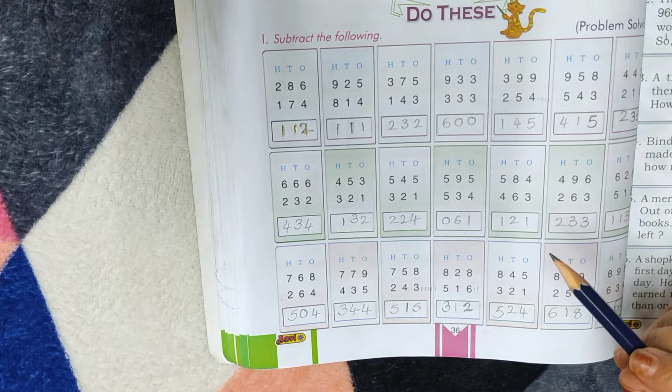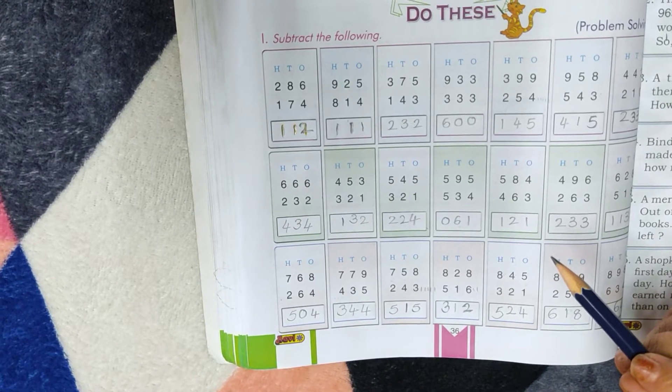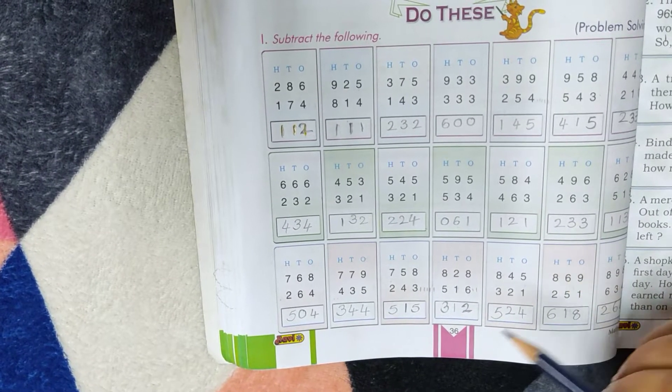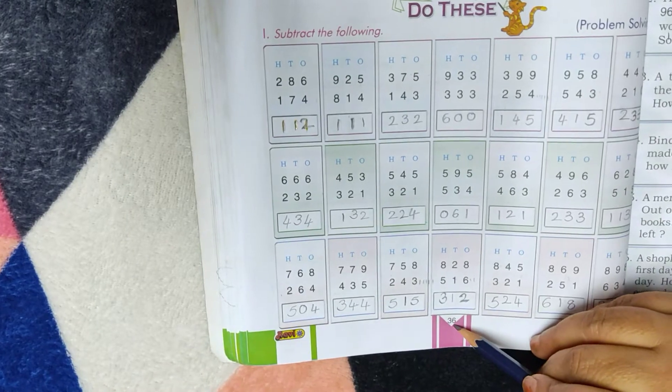Today I am going to explain you subtraction of three digit numbers without borrowing, page number 36.